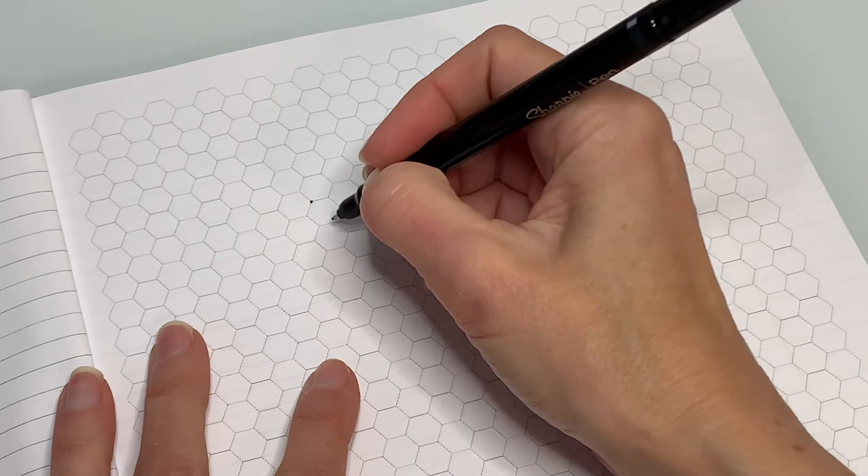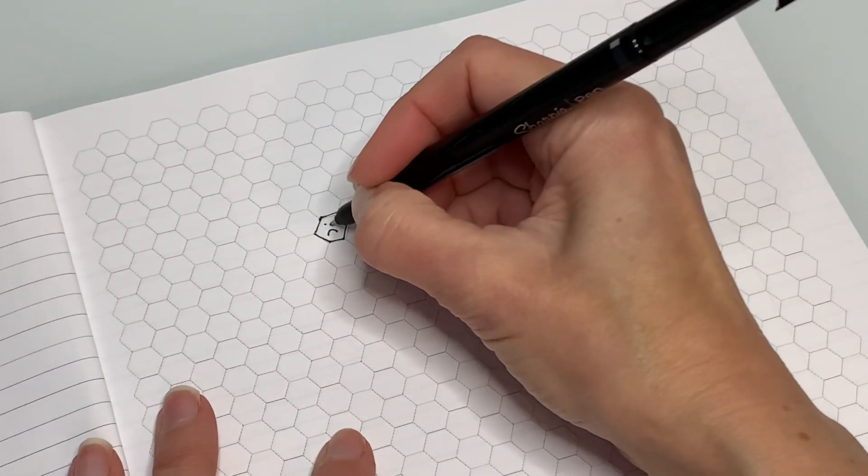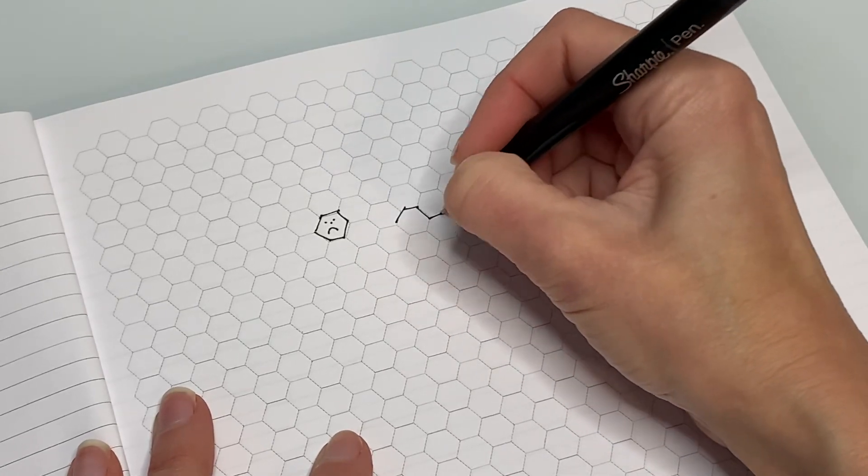And then I got even more disappointed when I started drawing and I realized oh my gosh the hexagons are sideways. Oh I do not like that at all.